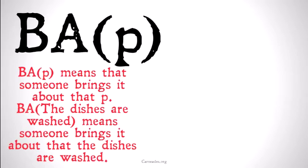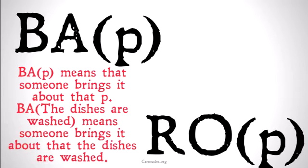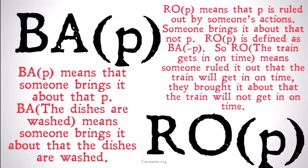BA refers to someone generally, not a specific person. So 'BA, the dishes are washed' means someone brings it about that the dishes are washed. We're also going to have a couple of other operators that correspond in our classic modal logic format. RO means that P is ruled out by someone's action — someone brings it about that not P. RO is defined as BA not P. So 'RO, the train gets in on time' means that someone ruled it out that the train will get in on time — they brought it about that the train will not get in on time.